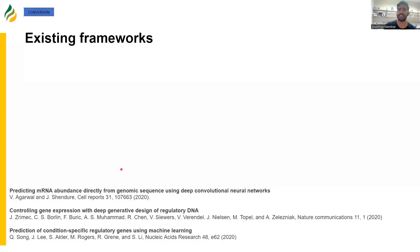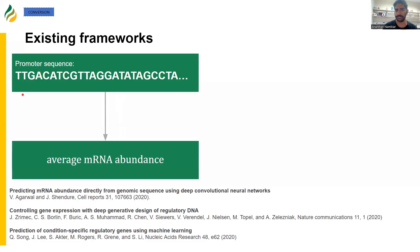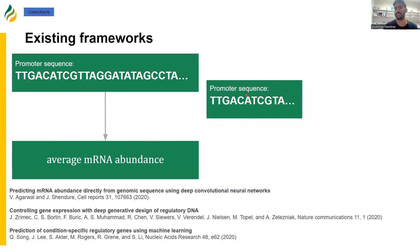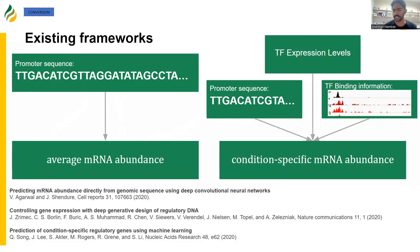So what are the existing frameworks for predicting gene expression? One framework starts with the promoter sequence and predicts average mRNA abundance from that. The issue with this is that we want to predict condition-specific expression, not the average across a wide range of conditions — this is what the first two papers here are doing. The third paper addresses the condition-specific problem by not only taking promoter sequences, but also TF expression levels and TF binding information to predict condition-specific mRNA abundance. However, TF binding information is not readily available for non-model species, and we actually care about some non-model species.